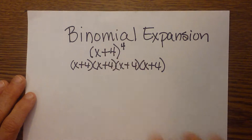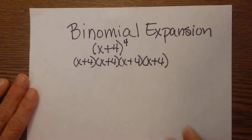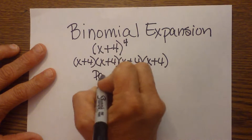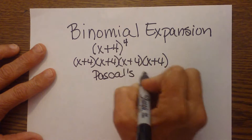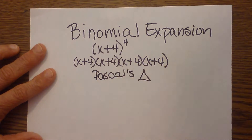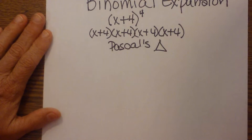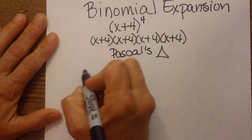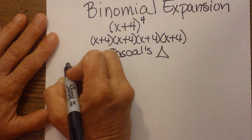But there's actually another way to do it. We're going to use Pascal's triangle to expand this. Pascal's triangle gives you the coefficients when you raise binomials to different powers.